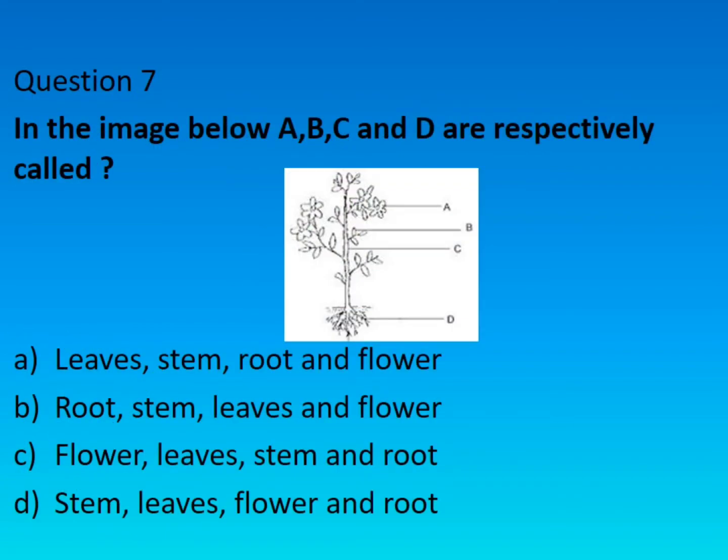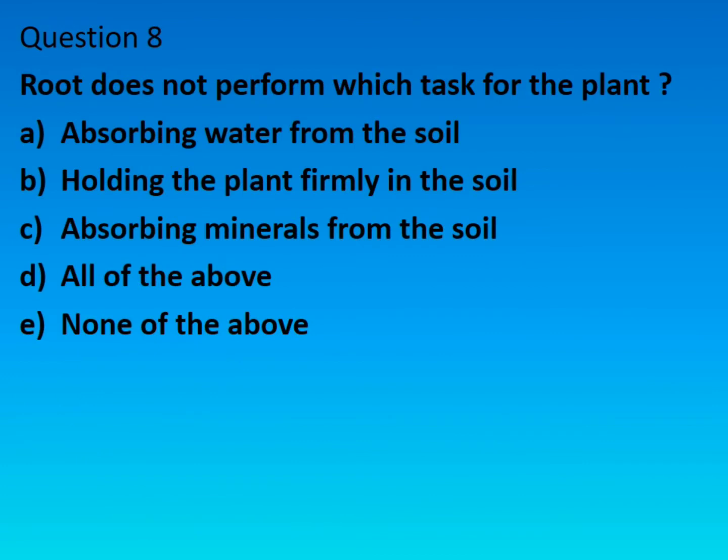Question number seven: in the image below, A, B, C and D are respectively called — the right answer is option C: flower, leaves, stem and root. Question number eight: root does not perform which task of the plant?